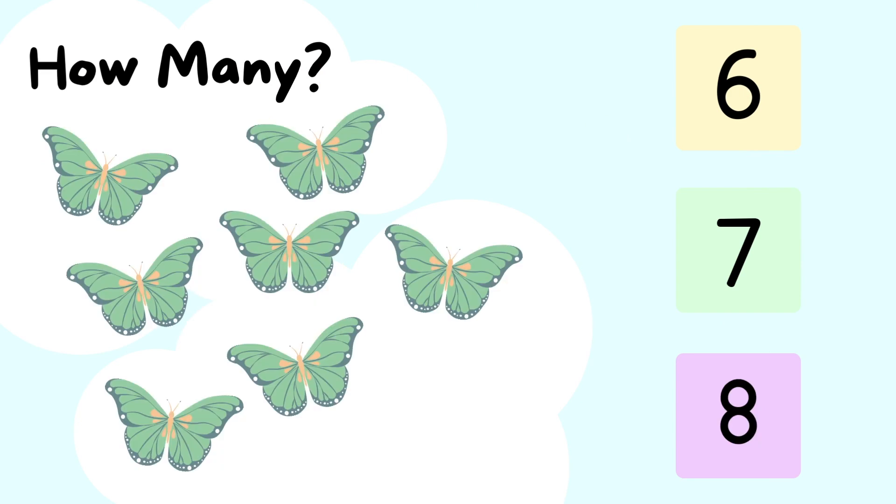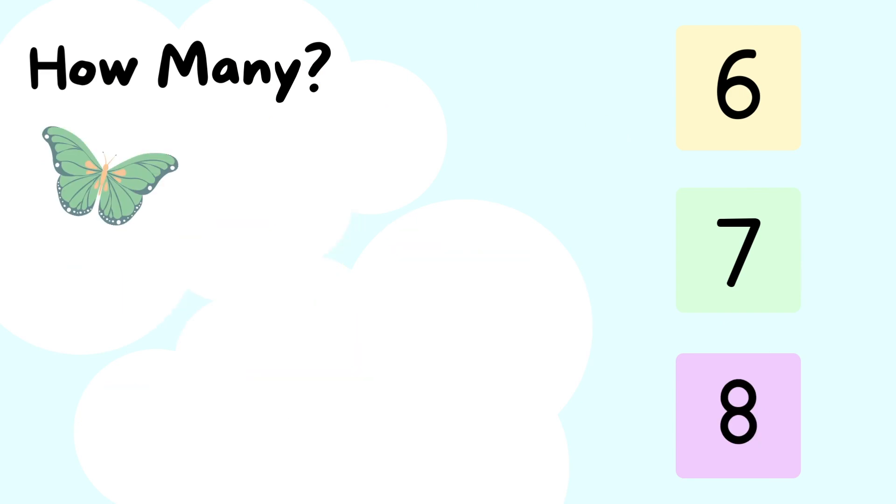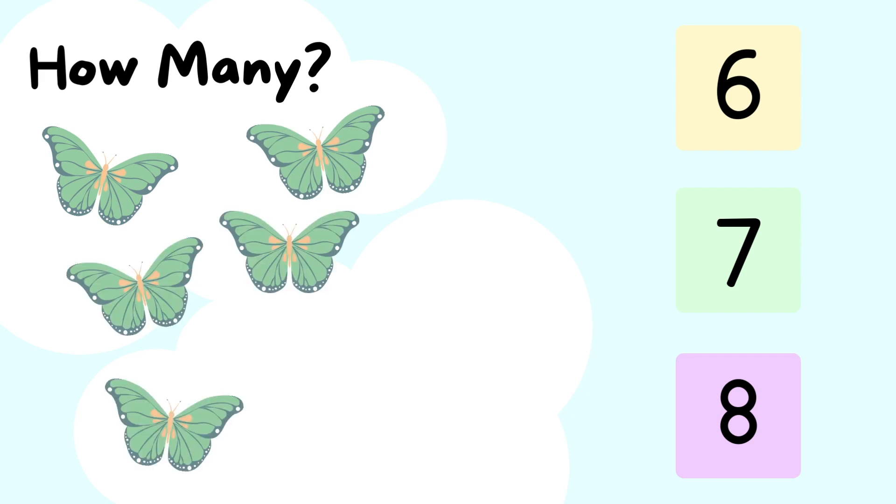How many butterflies do you see? Let's count. One. Two. Three. Four. Five. Six. Seven. There are seven butterflies. Well done.